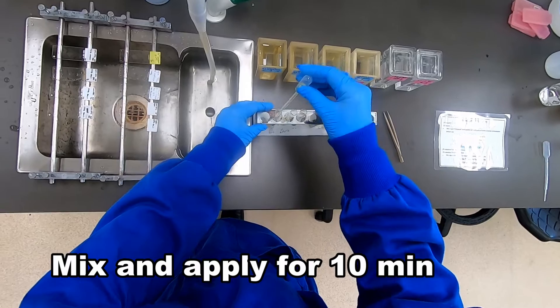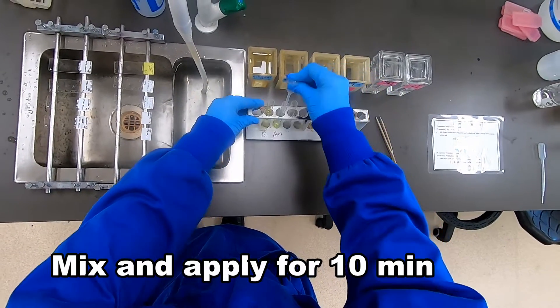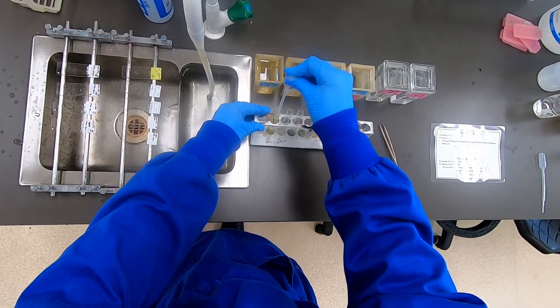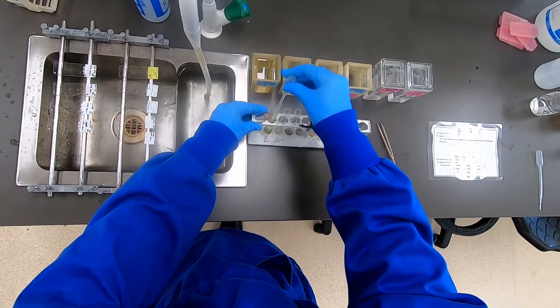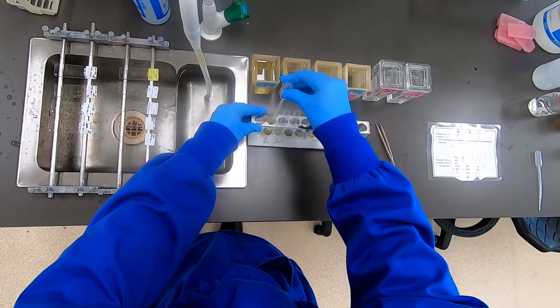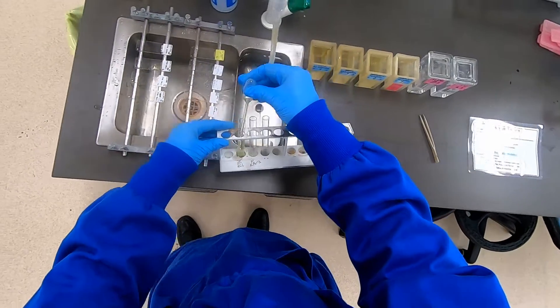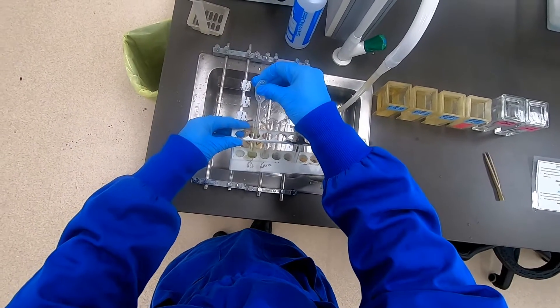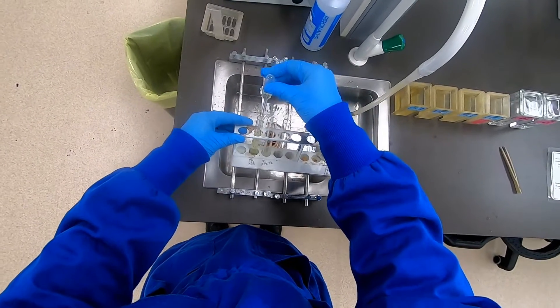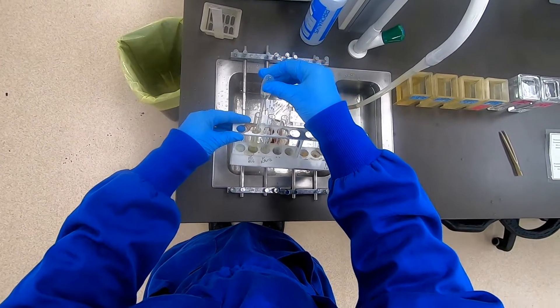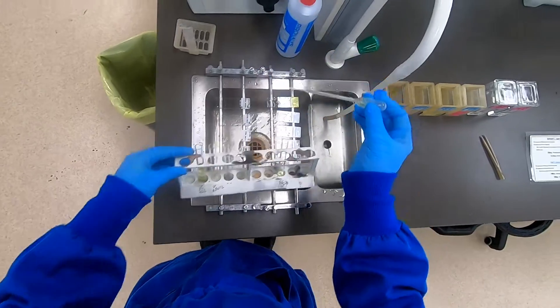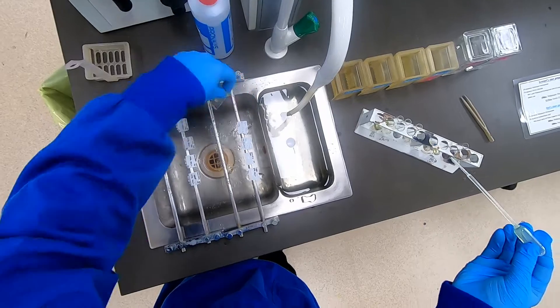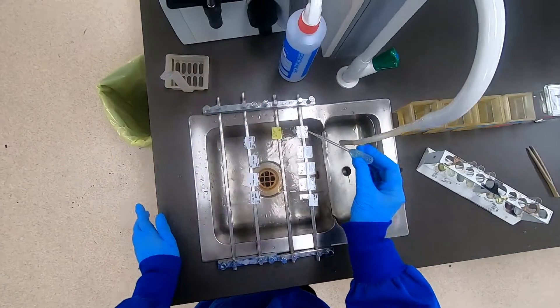We simply mix the 4 mL of the potassium ferrocyanide with our hydrochloric acid. Once that's been mixed well, we can place that onto each of the slides. Having a total of 8 mL gives us sufficient to put 1 mL per slide.